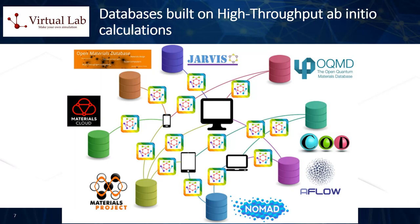Some of the best established high-throughput first principles computational materials databases, each comprising hundreds of thousands of computed material structures, features, and associated physical and chemical properties, include the Open Quantum Materials Database (OQMD), the Materials Project, the Nomad Database, and the Aflo Database. The viewer is referred to the websites of each of these materials database projects for obtaining further information and exploring their functionalities and stored information.